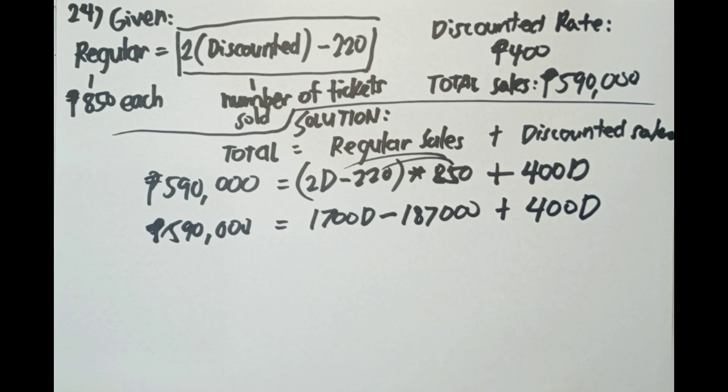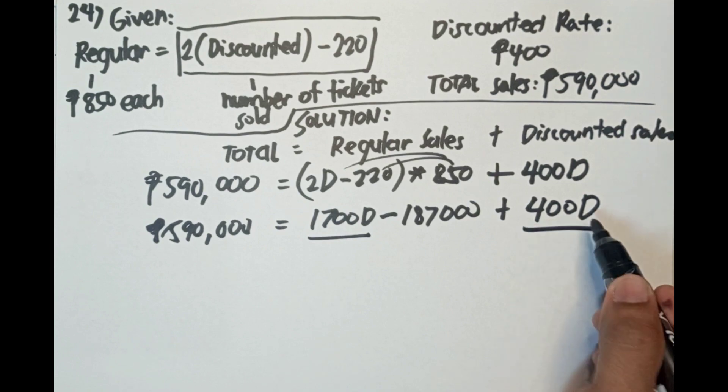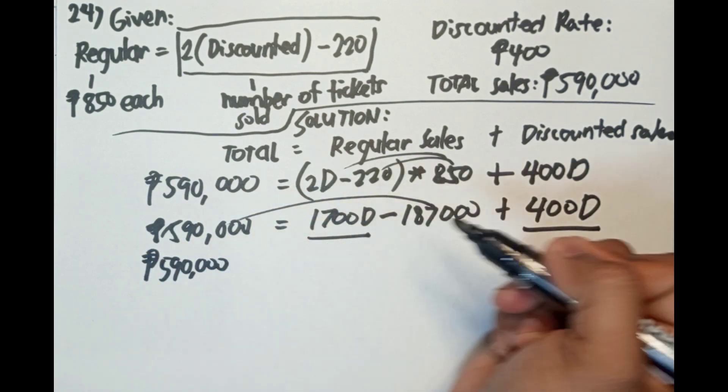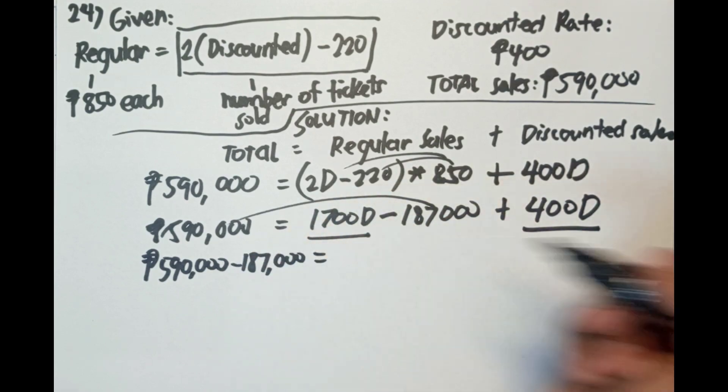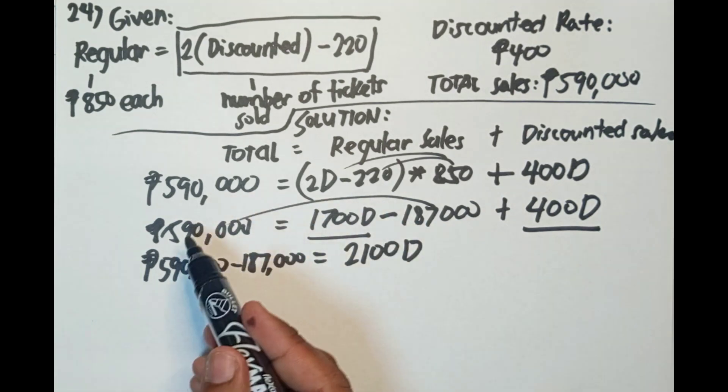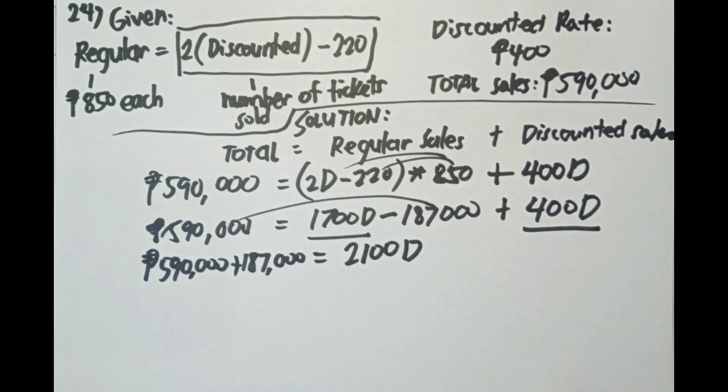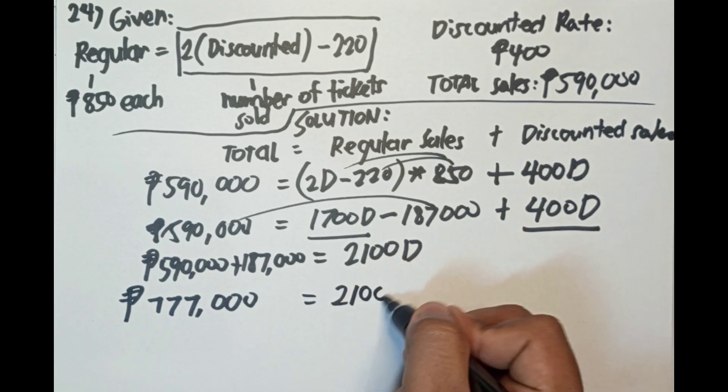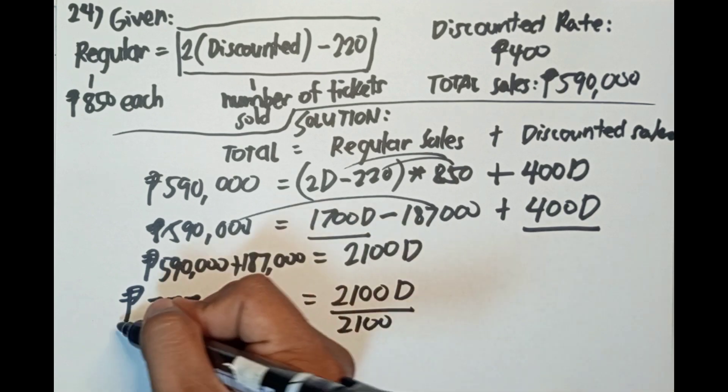590,000 pesos equals 850 times 2d is 1,700d. 850 times 220 is minus 187,000, plus 400d. Ang gagawin natin dito is kukombine natin itong 1,700d tapos 400d. Tapos ito ilipat natin sa kabila. 590,000 pesos minus 187,000, mali. Itong 187,000 kapag nilipat dito sa kabila magiging positive. 590,000 pesos plus 187,000 is 777,000 pesos equals 2,100d divided by 2,100 divided by 2,100.